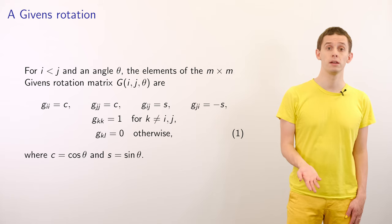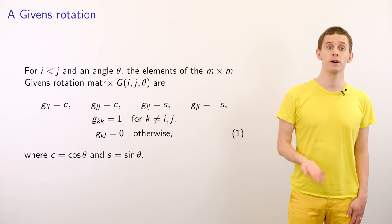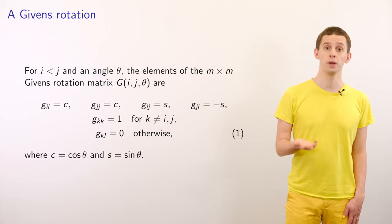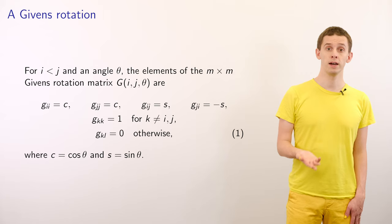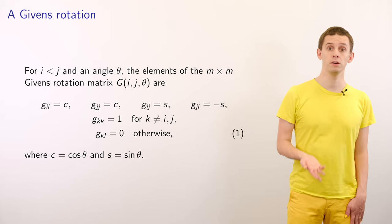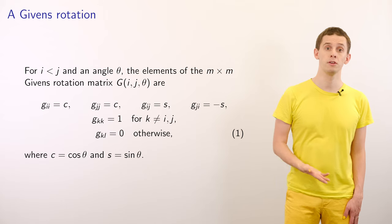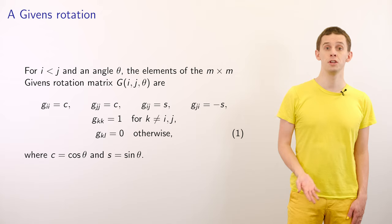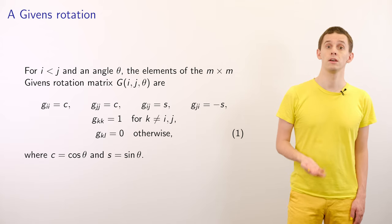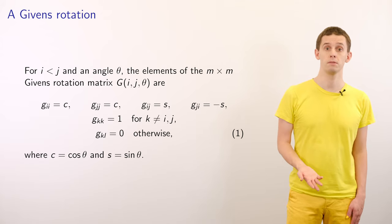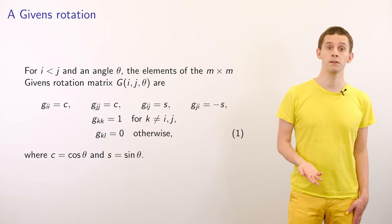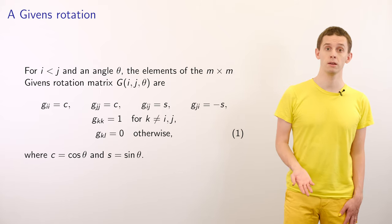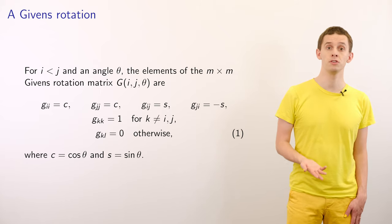For two indices i less than j and an angle theta, we can define the Givens rotation matrix G to have the following entries. We'll first write down that c is equal to cosine theta and s is equal to sine theta, and then we'll have that G_ii is equal to c, G_jj is equal to c, G_ij is equal to s, and G_ji is equal to minus s. We'll also have that G_kk is equal to 1 when k is not equal to i or j, and G_kl is equal to 0 otherwise.